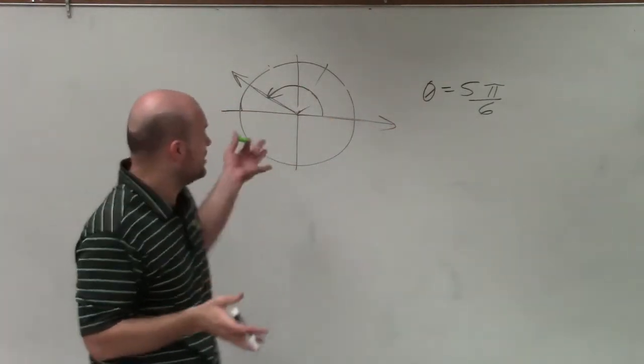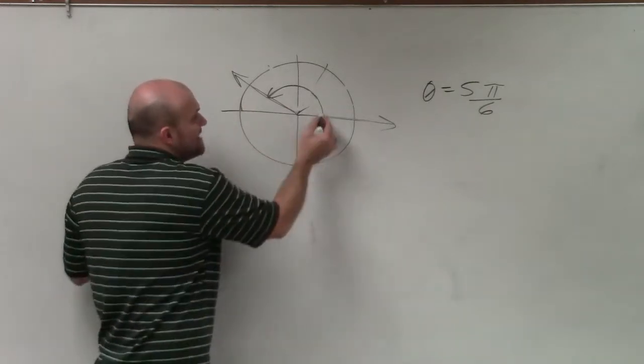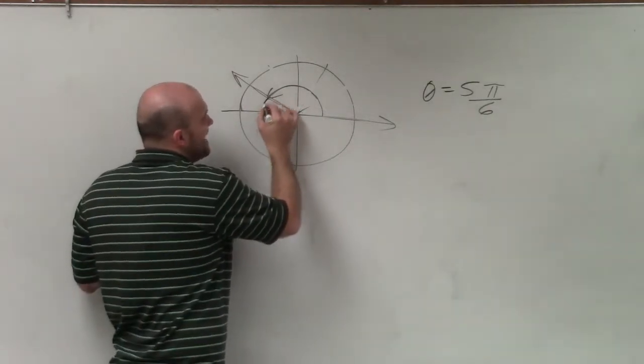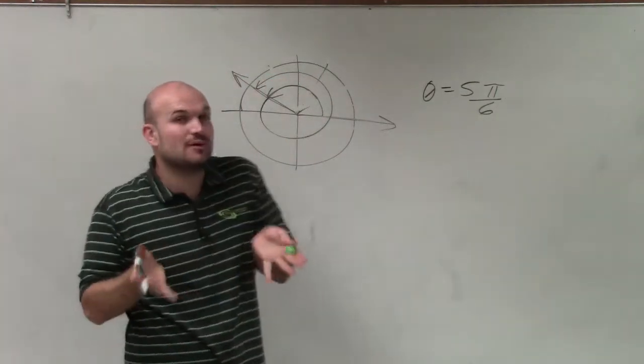So to find the smallest positive coterminal angle, remember, to have the same initial and terminal side, well, if I add a revolution, which in terms of radians would represent 2π.